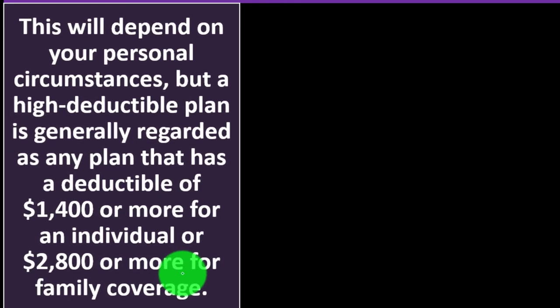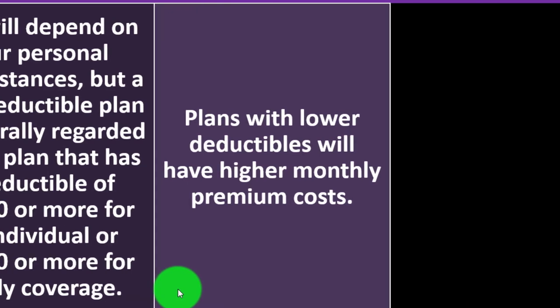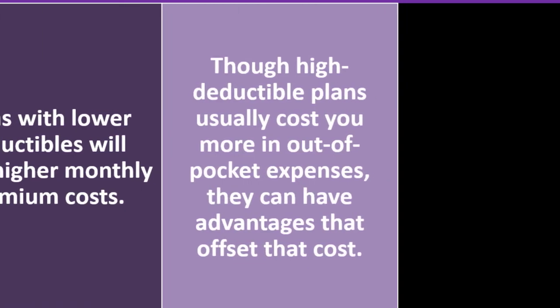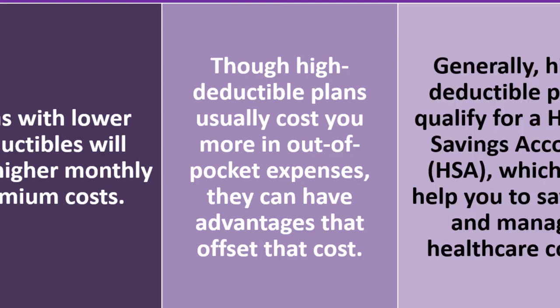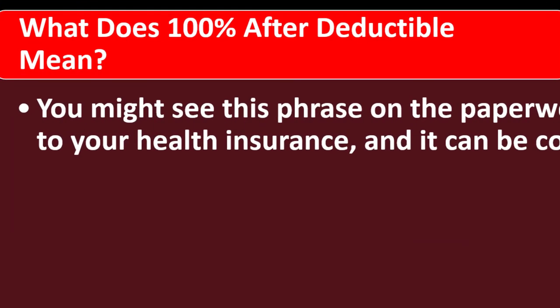What is an average deductible? This depends on your personal circumstances, but a high-deductible plan is generally regarded as any plan with a deductible of $1,400 or more for an individual, or $2,800 or more for family coverage. The higher the deductible, the lower the premiums. Plans with lower deductibles will have higher monthly premium costs. Though high-deductible plans cost more in out-of-pocket expenses, they can qualify for a Health Savings Account (HSA), which can help you save for and manage healthcare costs.